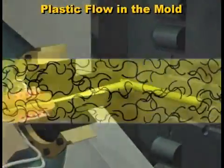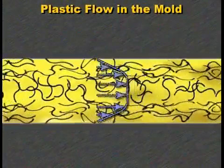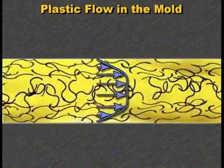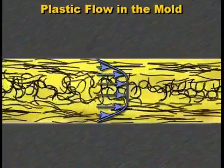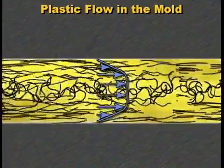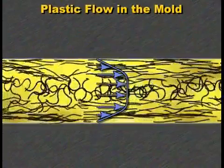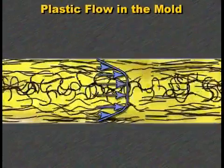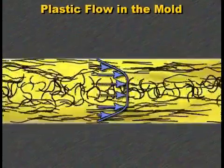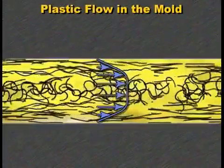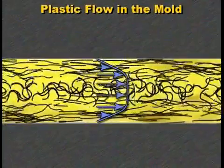When we make the molecules flow, they develop a velocity profile. The plastic in the center flows the fastest, as shown by the longer arrows. The plastic near the walls flows the slowest because its speed is reduced by friction with the wall. This flow profile shows that the speed of each molecule depends on how far it is from the wall — fastest in the center, and slowest near the wall.